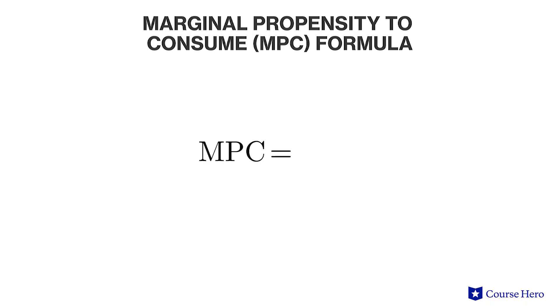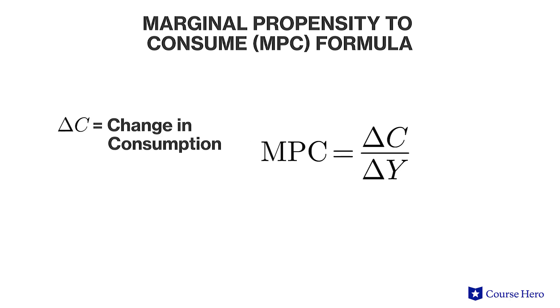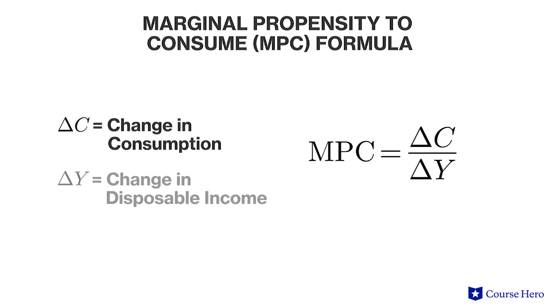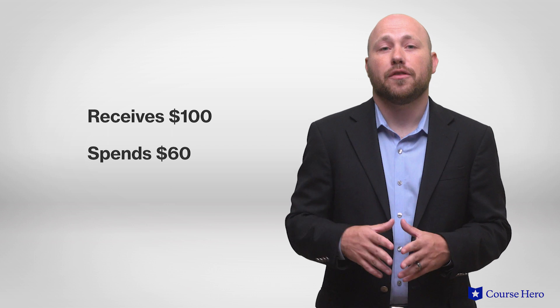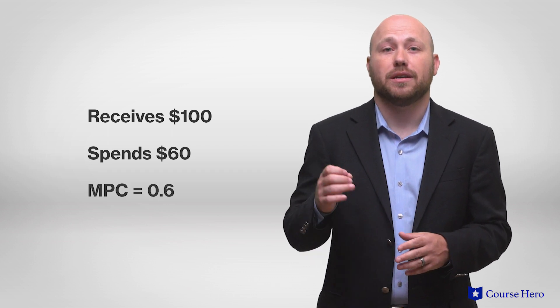The formula for MPC is delta C divided by delta Y, where delta C is the change in consumption and delta Y is the change in disposable income. If an individual receives a windfall of $100 and spends $60 of it, their marginal propensity to consume is 0.6.